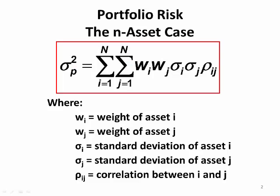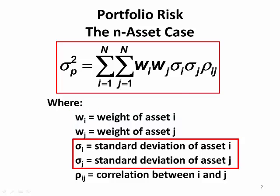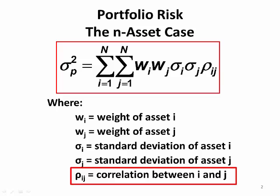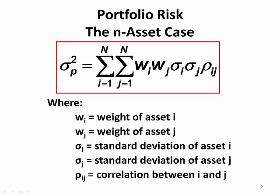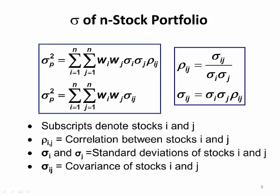First let's look at the general N asset case. To find the variance and thus the standard deviation we need the weight, or the percent of dollars, of each asset in the portfolio, the standard deviation of returns of each asset, and the correlation between each pair of assets. For a two asset portfolio this isn't too bad, but when you have more than two assets it gets a bit busy. Note that the N asset case can be shown in two different ways: using either the correlation coefficient between asset i and j designated by rho, or the covariance between i and j.